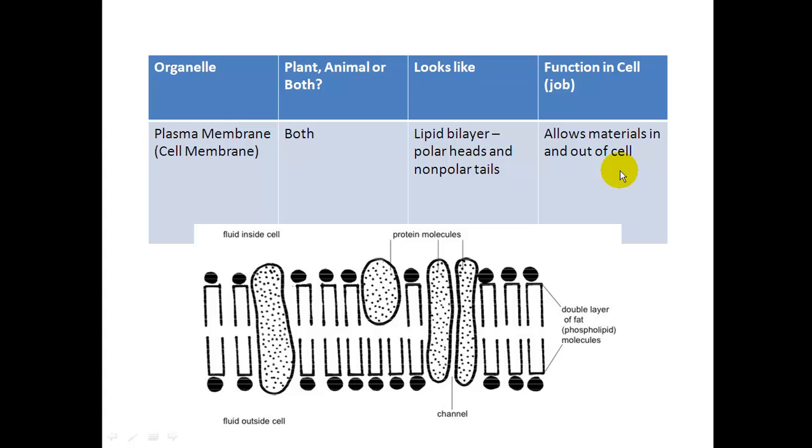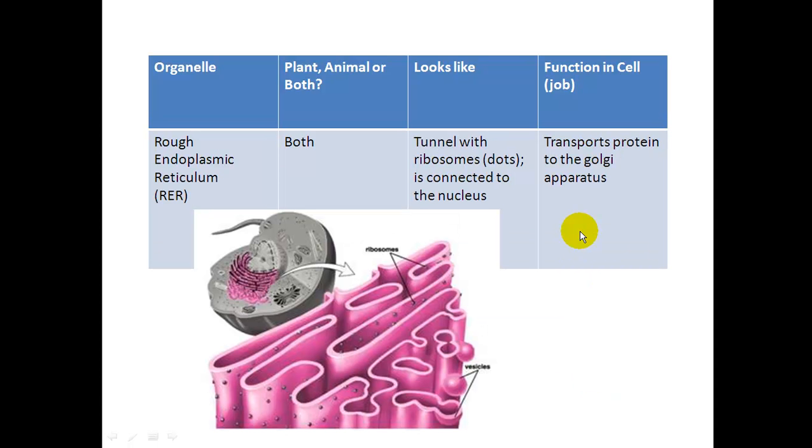Its job in the cell is to allow materials in and out of the cell. Cell membranes are semi-permeable or selectively permeable. They will allow things in or out of the cell as they wish. We will talk more about these proteins in our next chapter.